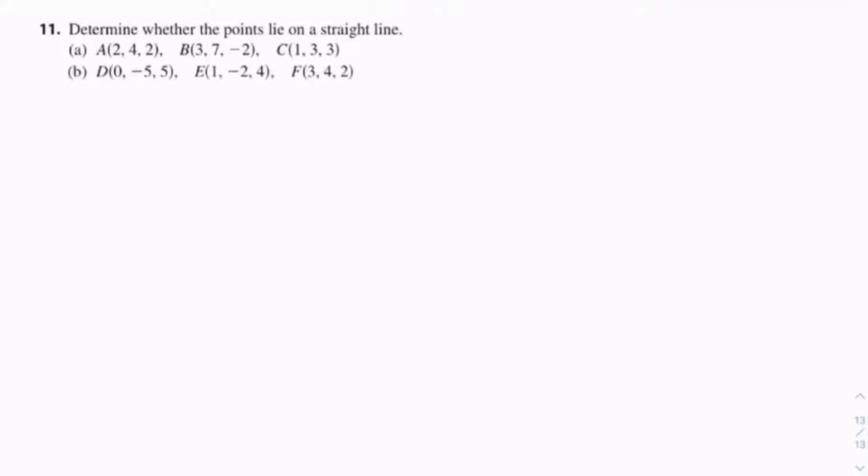11. Determine whether the points lie on a straight line. So for part A, we have points 2, 4, 2, then 3, 7, negative 2, and 1, 3, 3.